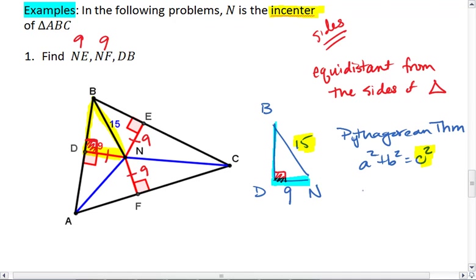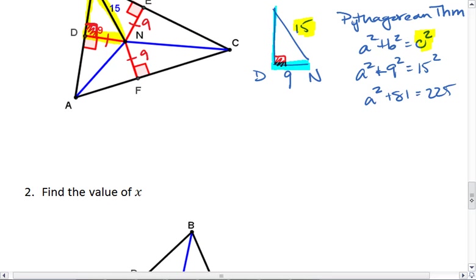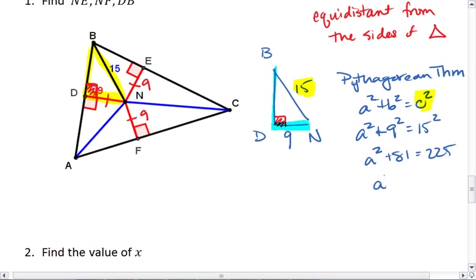We can plug these values in. Get A squared plus 9 squared equals 15 squared. A squared plus 81 equals 225. A squared equals 144.